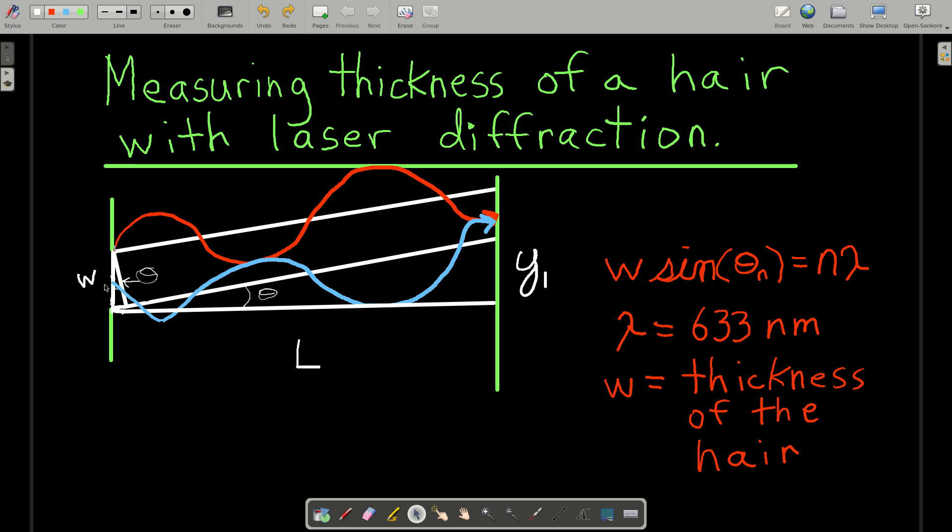It ends up that a hair acts just like a slit, like when we did the double slit experiment. When the light comes through here and reaches the hair, after the hair it acts as if it's a new source of light, so each wave comes off.